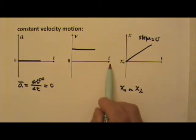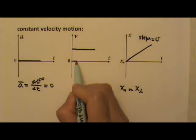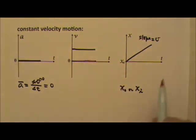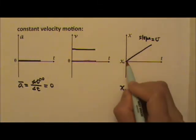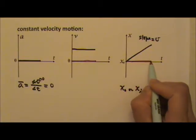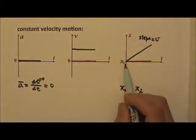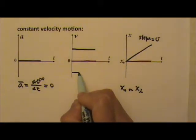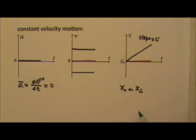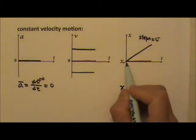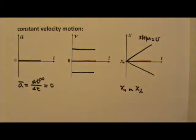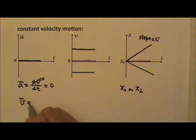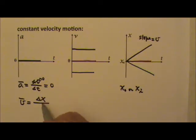You can also have a constant velocity that is zero. In that case, your position has a constant zero slope — the position doesn't change because the velocity is zero. Your velocity can also be a negative constant. If it's a negative constant, your slope will be a negative constant.